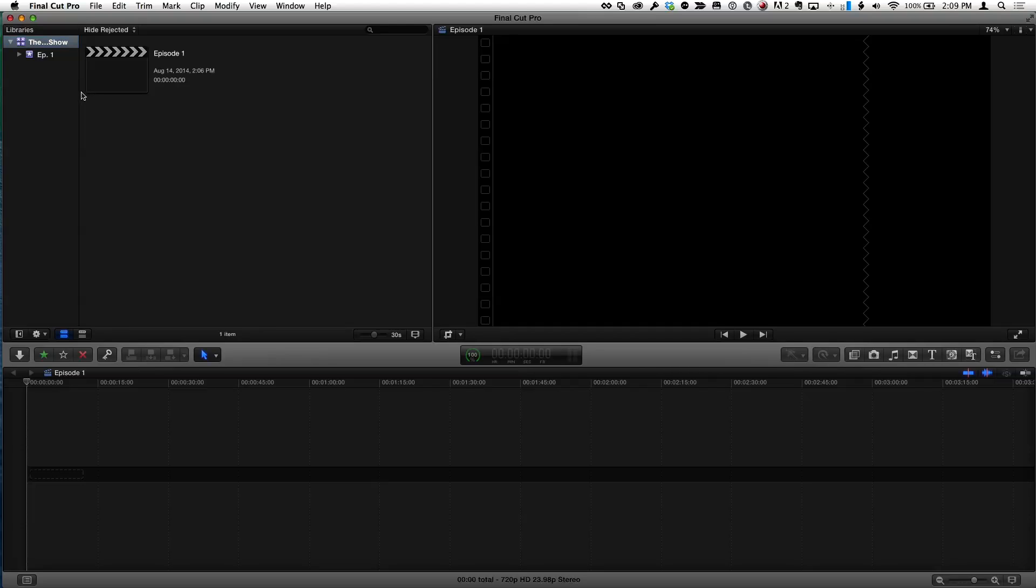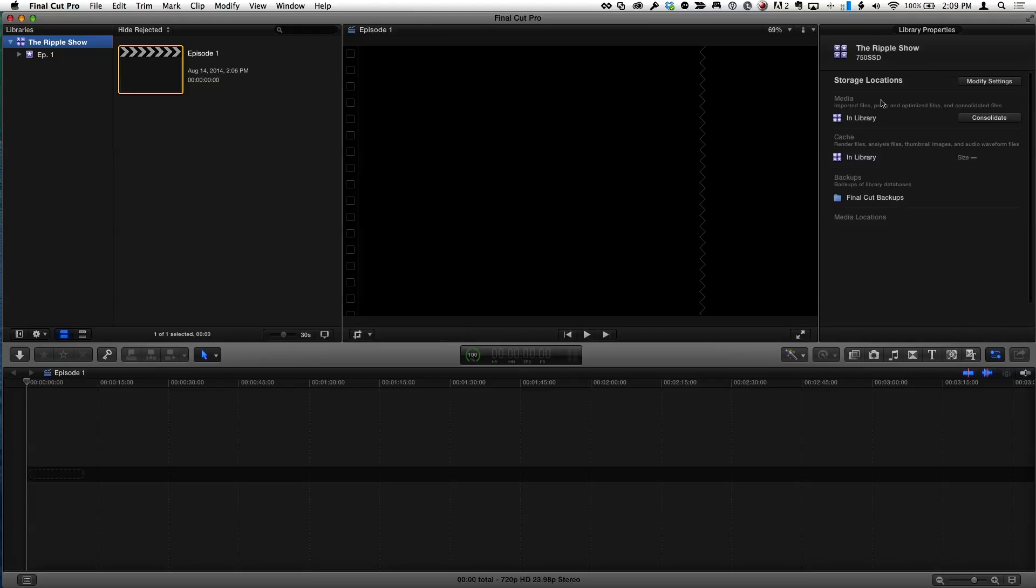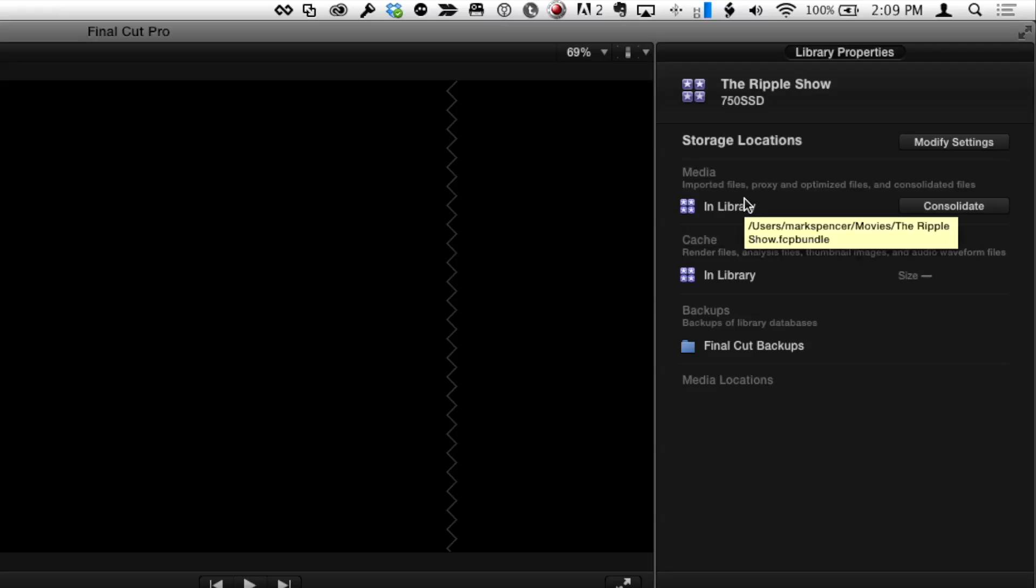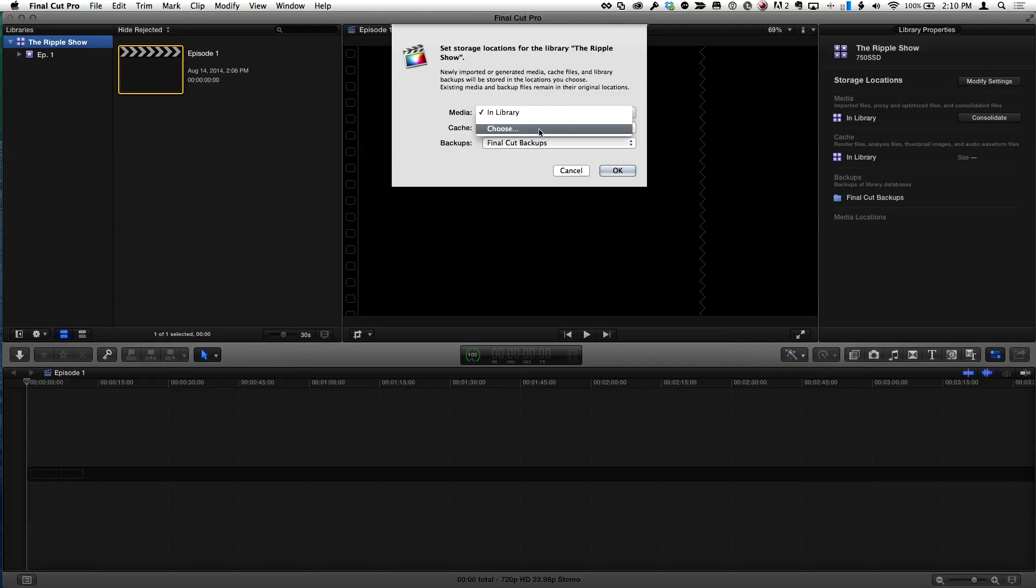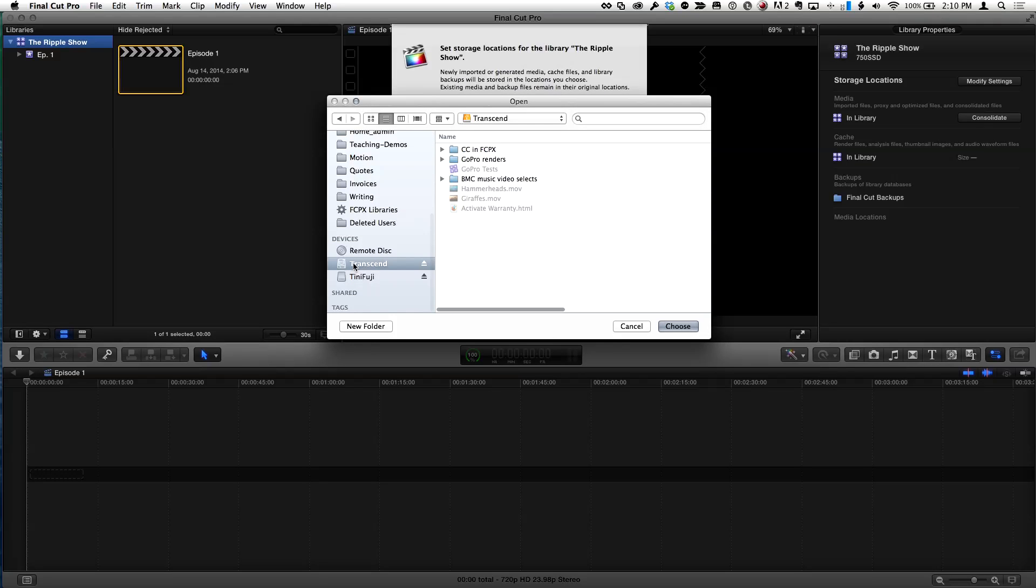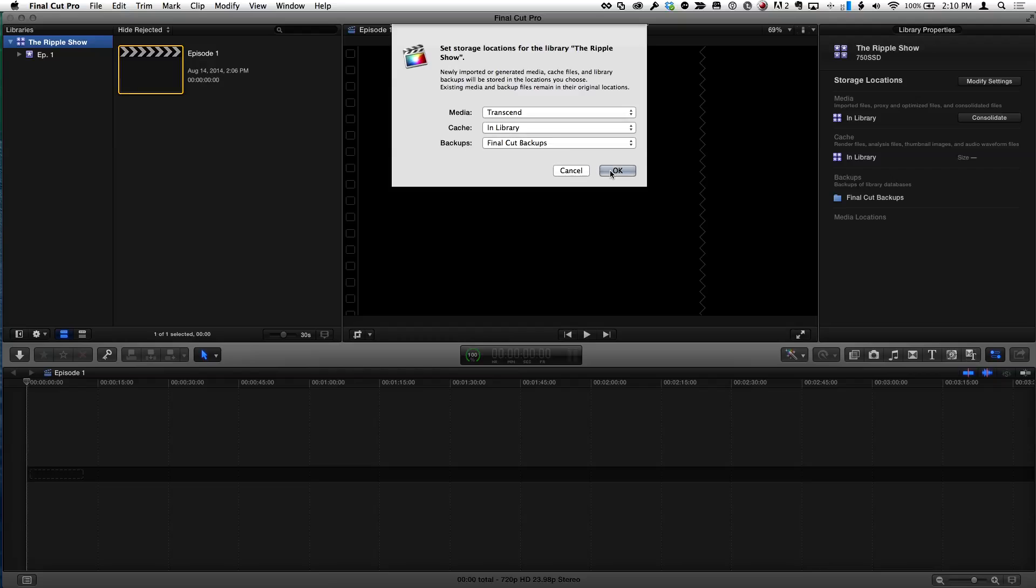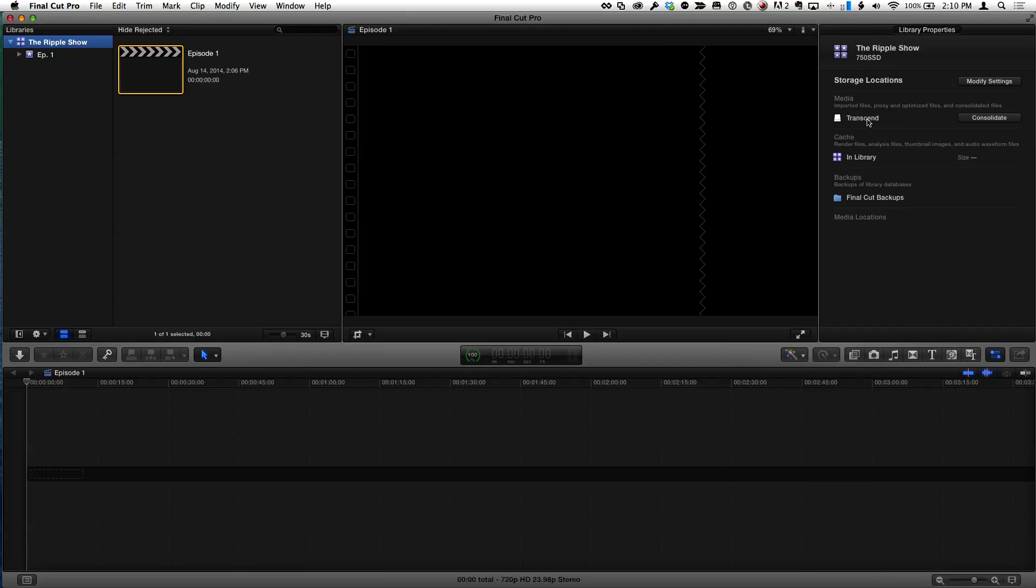I'm going to look at a couple scenarios. First, from scratch, how do you set it up correctly? I've created a new library, and if I select it and go to the library inspector, we can see it's set up currently to place all the media including original and any transcoded media in the library. That library exists on this machine in the movies folder. I haven't imported anything yet, I'm just starting out. I know I want my proxies here on this machine but I want all my original media on another drive. So I'm going to click modify settings and for the media I'm going to target that other drive. I have a drive connected here which I'll select and hit choose.